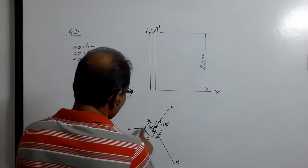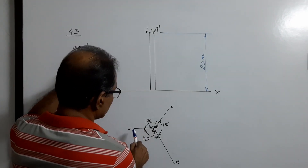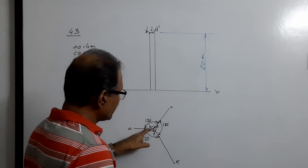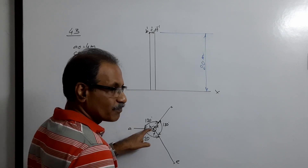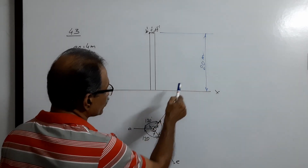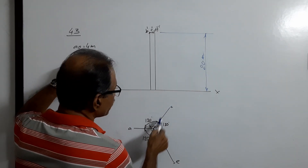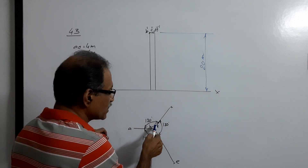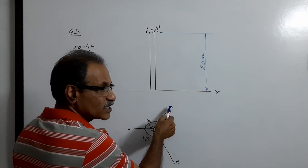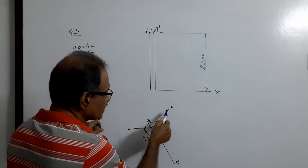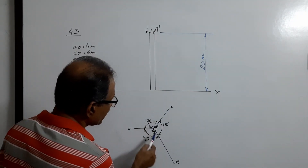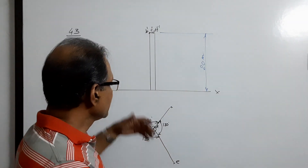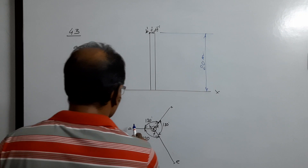I draw first of all AO, whose length is four meters. This wire is connected to the shell at B. Then at 120 degrees I draw another line, and CO equals six meters. D is the point where the wire is fitted to the shell, so DC is not six meters — CO is six meters. Similarly, EO is eight meters. I have drawn the plan of the three wires, then I project A up.